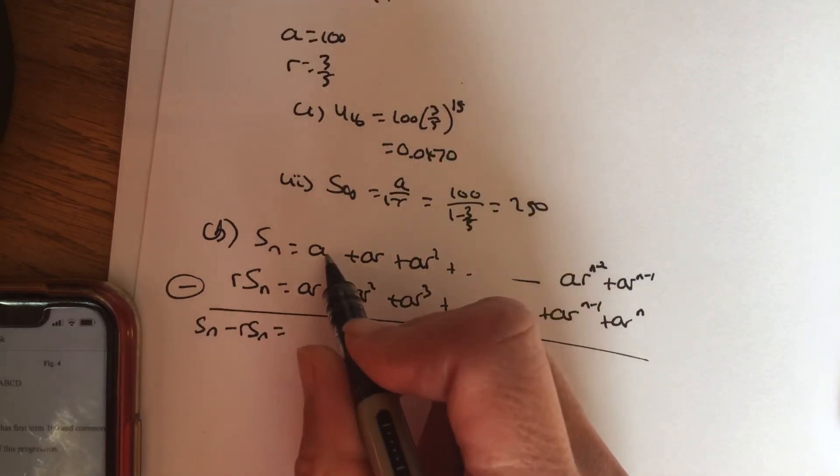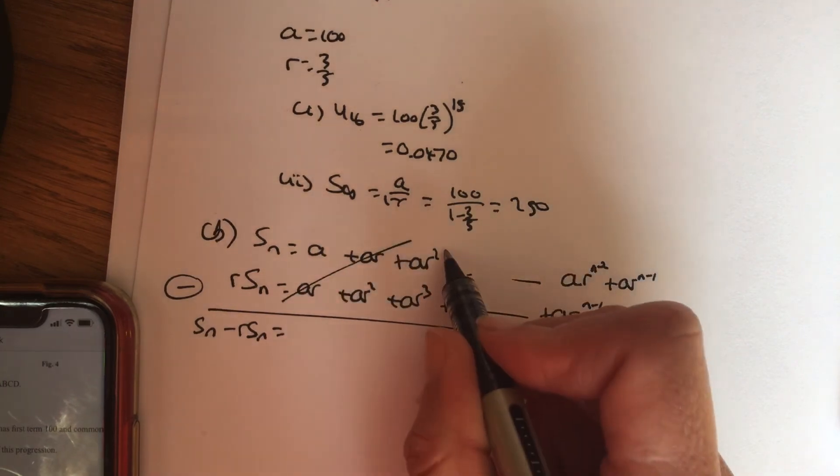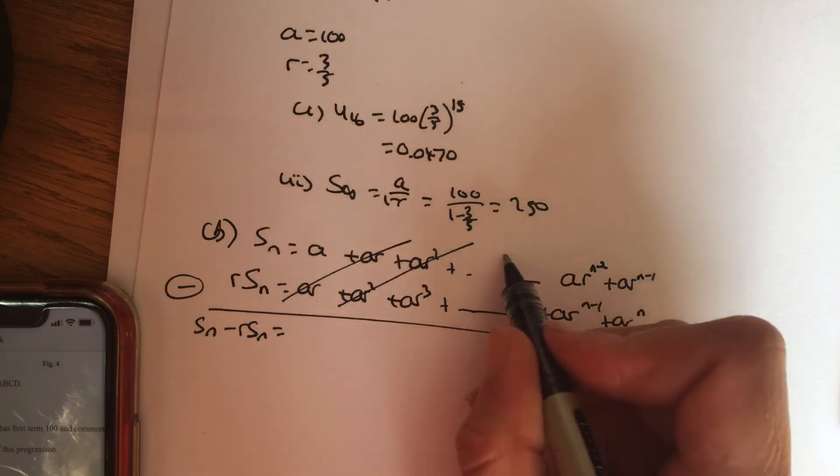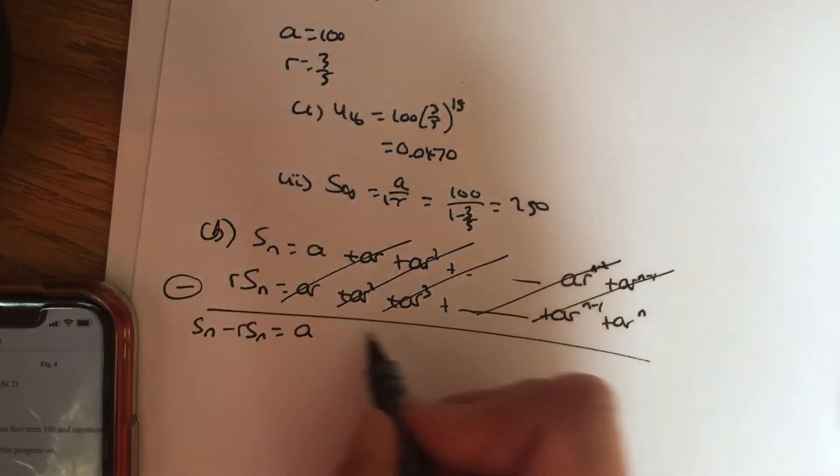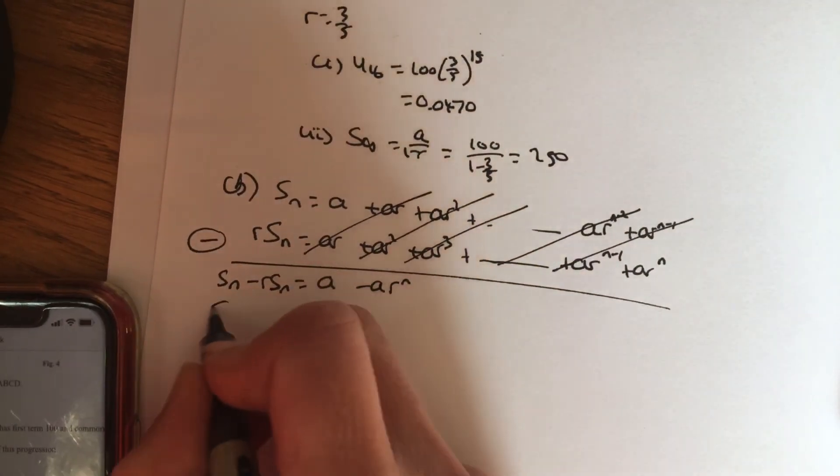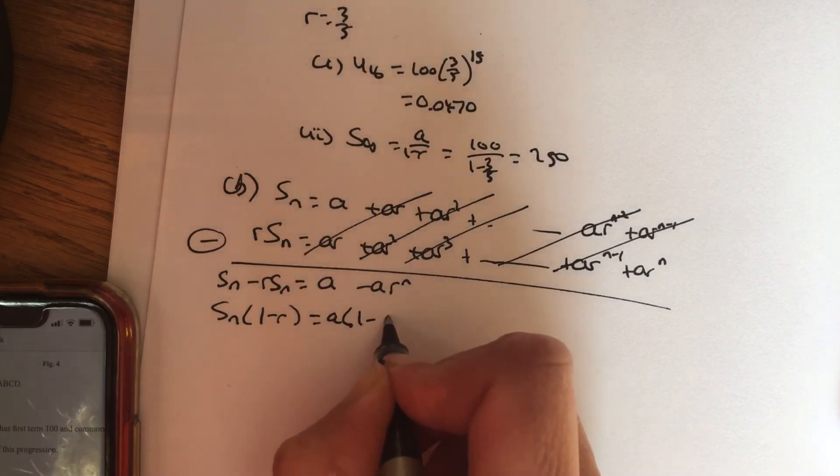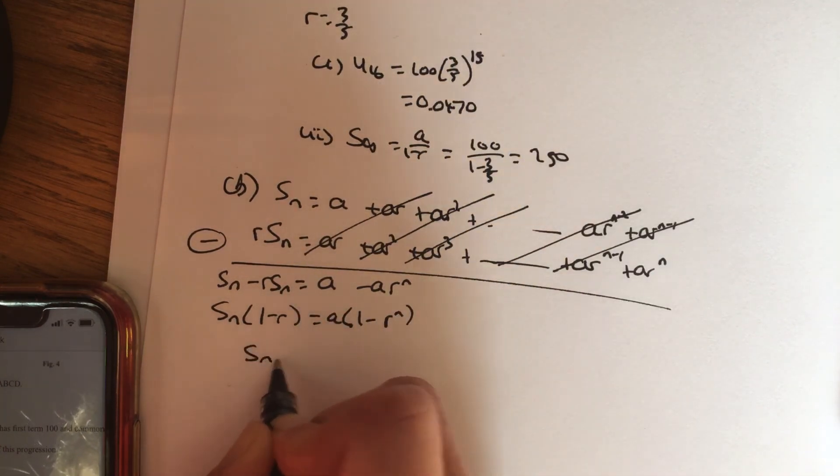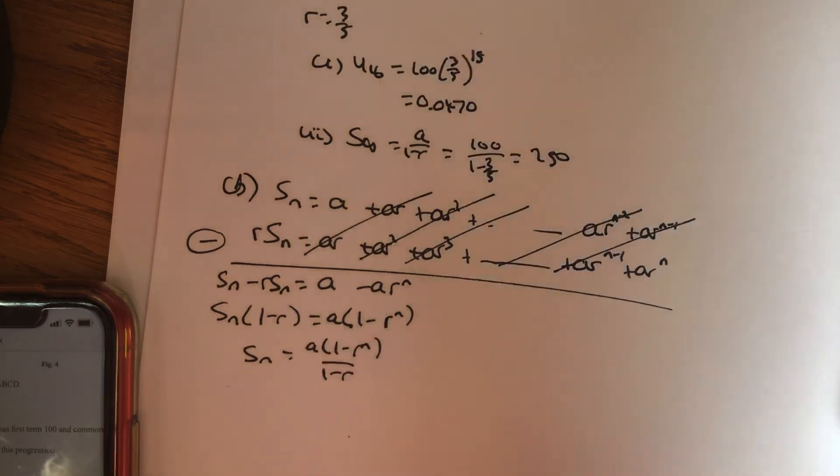Now, whenever you're doing a subtraction, if you go ar minus ar, ar squared minus ar squared, it knocks off this way, leaving you an a on the top, take away ar^n on the bottom. Factor out your sn, (1-r). Factor out your a, (1-r^n). Bring your bracket over to the other side. And you have proven the formula they want.